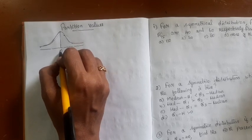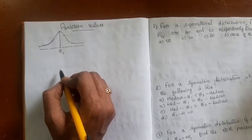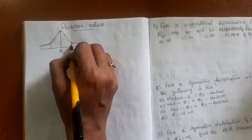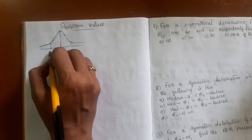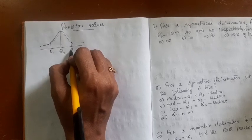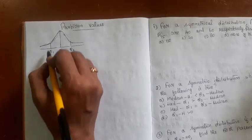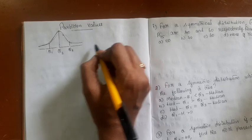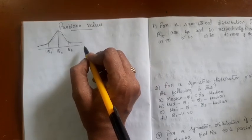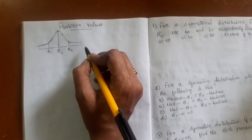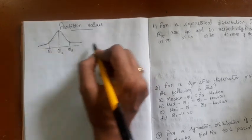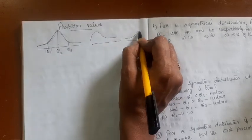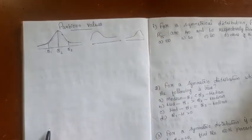The median divides the distribution into two equal parts, and the values which divide the distribution into four equal parts are quartiles. Based on these values, you can come to a conclusion regarding the nature of the distribution — whether it is symmetric, positively skewed, or negatively skewed.